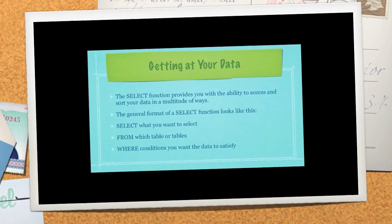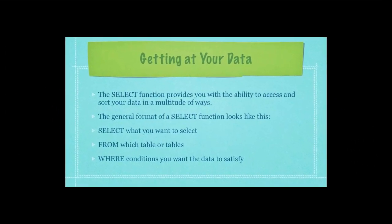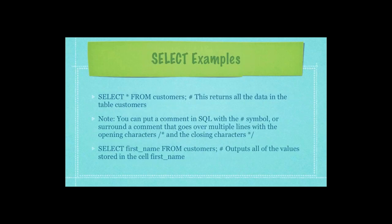The select function provides you with the ability to access and sort your data in a multitude of ways. The general format looks like this: first the statement select, then what you want to select, then the statement from followed by which table or tables, and finally where followed by conditions you want the data to satisfy. For example, select followed by a star sign from customers returns all of the data in the table customers — that's what the star represents.